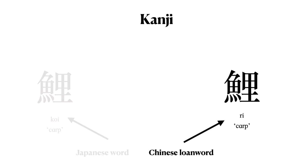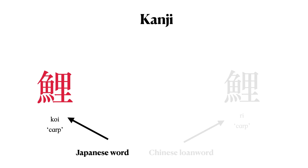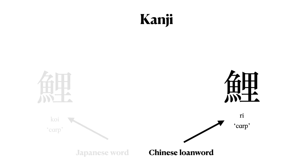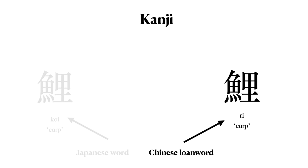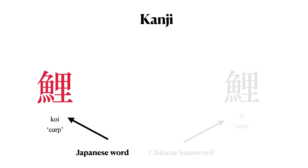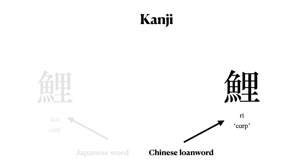Now, it happens that there already was a native Japanese word for carp, and that word was koi. Koi uses the exact same symbol. So we have ri, a Chinese loanword meaning carp, and koi, the native Japanese word also meaning carp, both using the same symbol. The first, ri, was a Chinese loanword. The second uses the Chinese symbol but represents the native Japanese morpheme koi. Both words have the same meaning — carp — but represent two distinct morphemes: koi, the native Japanese morpheme, and ri, the borrowed Chinese morpheme.